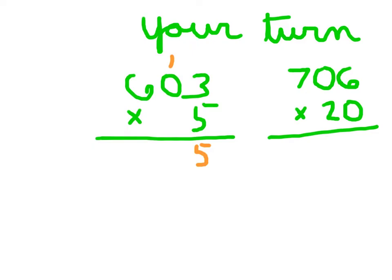Next step is 5 times 0, which is 0, plus 1, which is 1, and then 5 times 6, which is 30. 603 times 5 is 3,015.